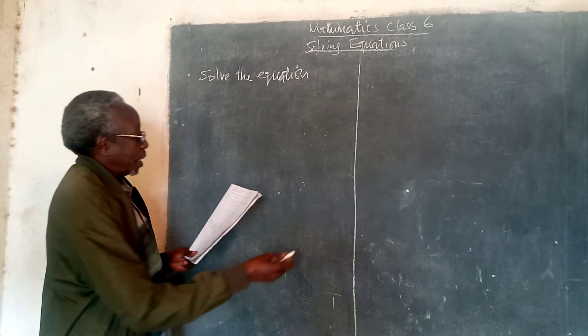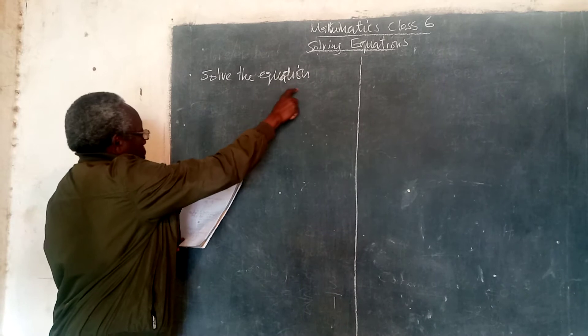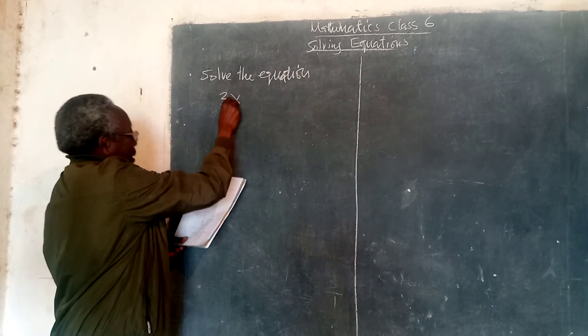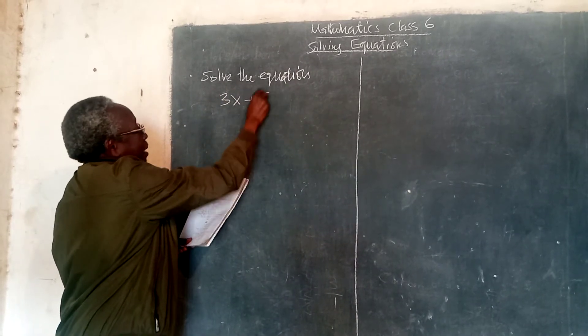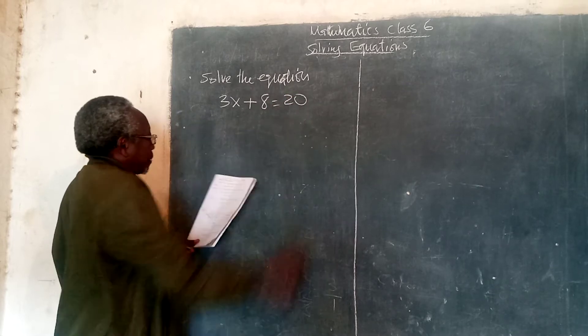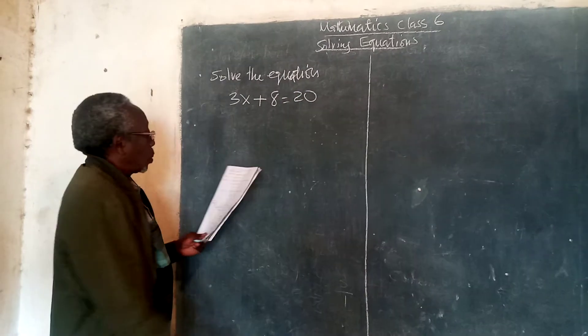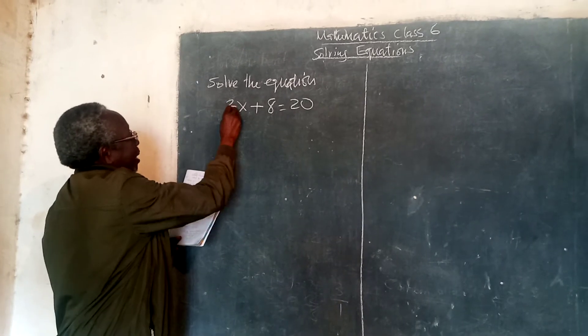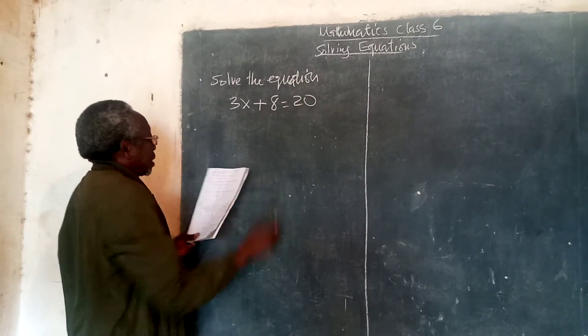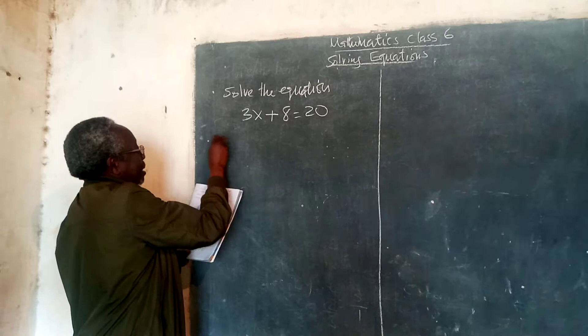Our first example here is solve the equation 3x plus 8 is equal to 20. The first step here is that 3x plus 8 is equal to 20.